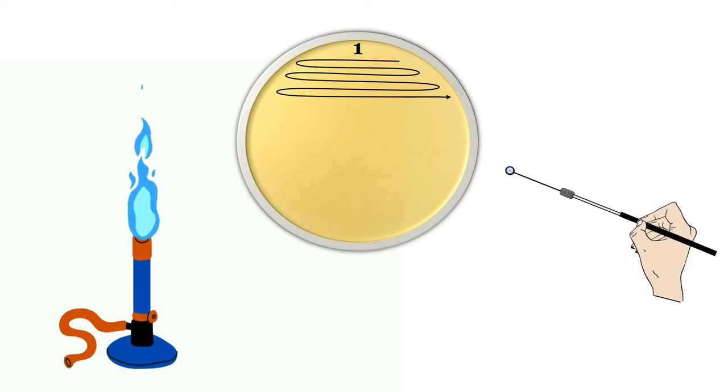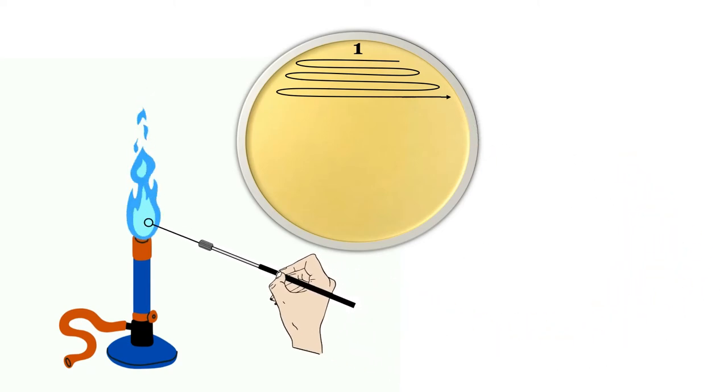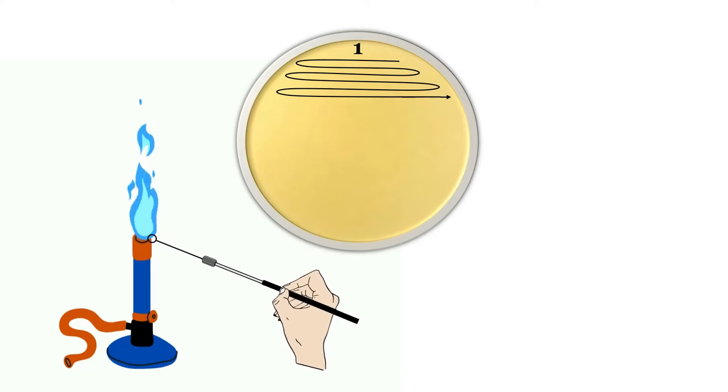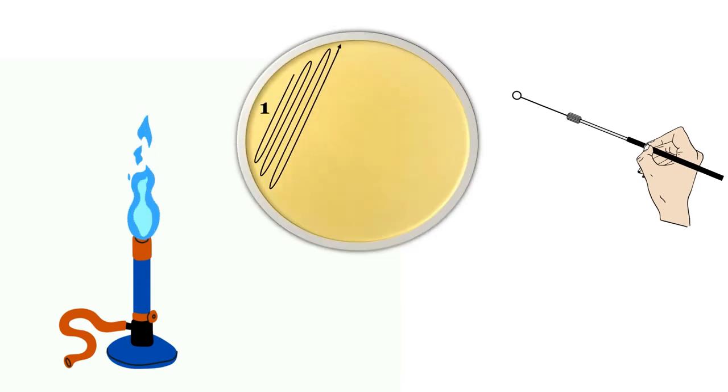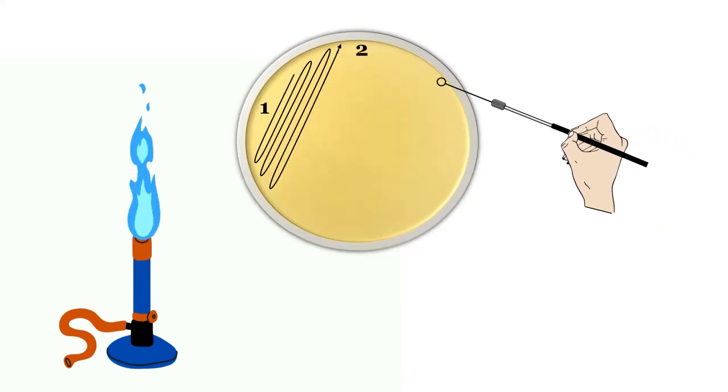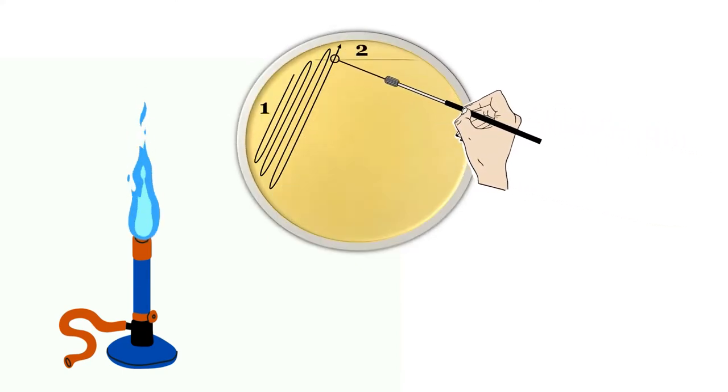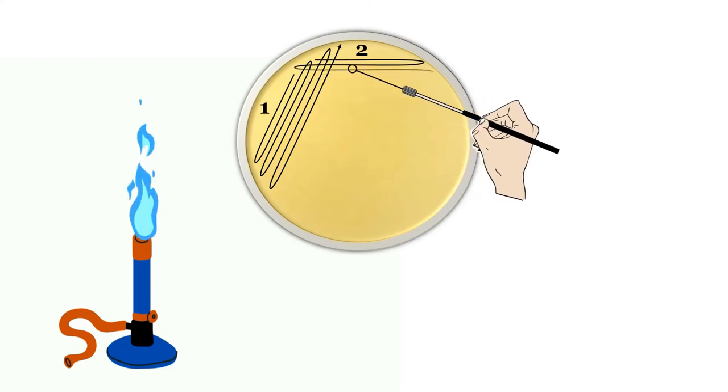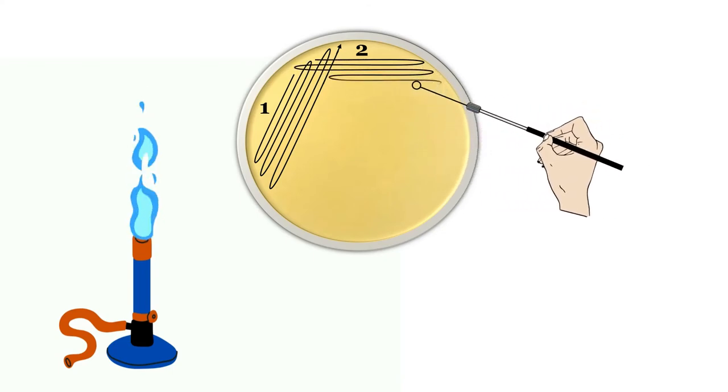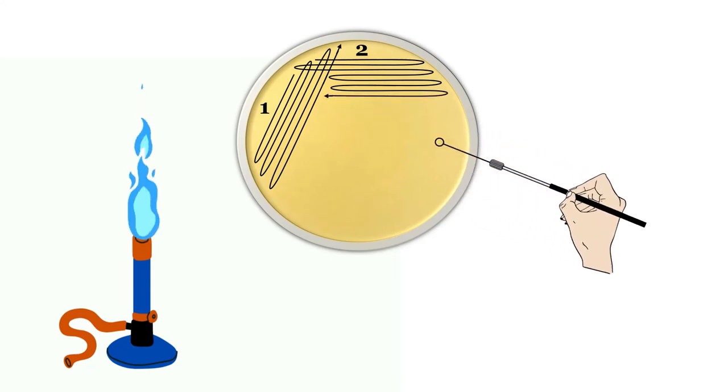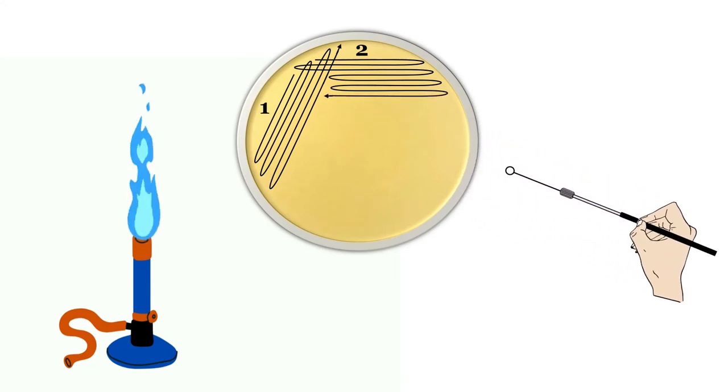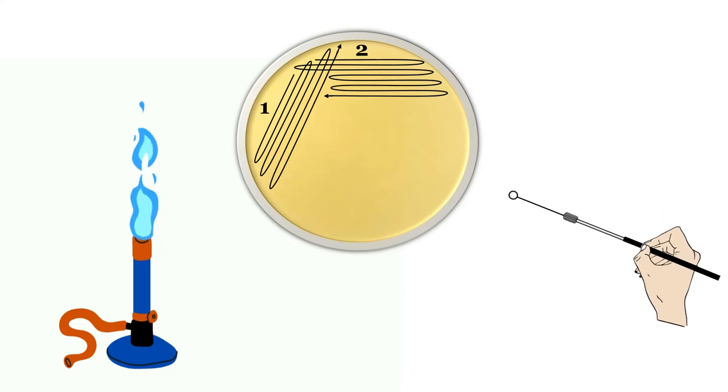Now flame the wire loop again and allow it to cool. Now rotate the petri plate less than 90 degrees and the sterile wire loop is placed in the corner of the first quadrant and drag the wire loop and streak in back and forth manner in the second quadrant. This step brings a few bacteria from sector 1 into sector 2.